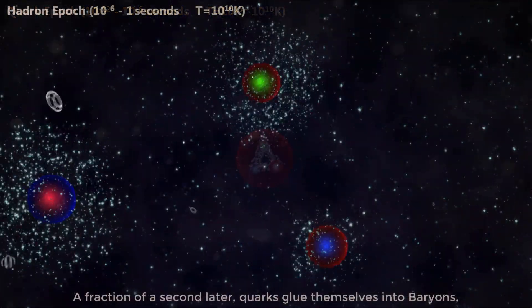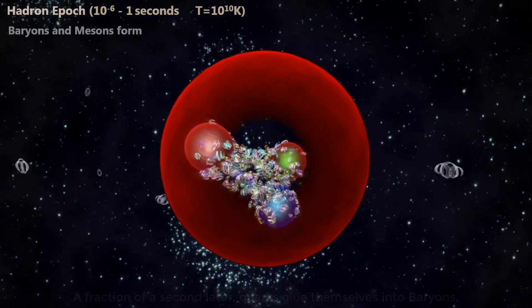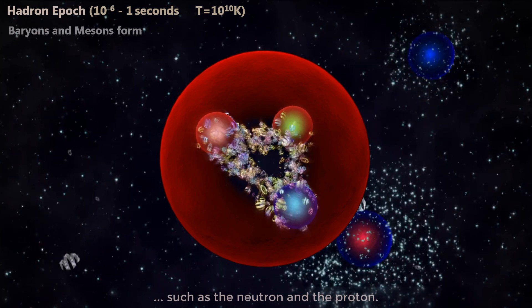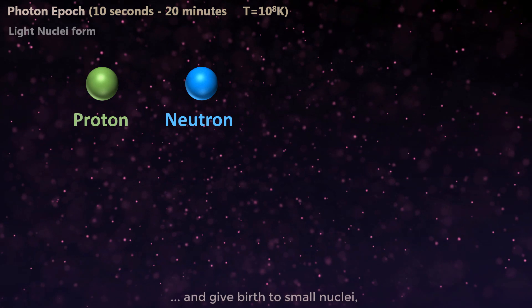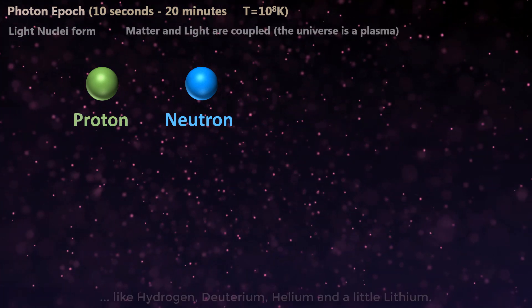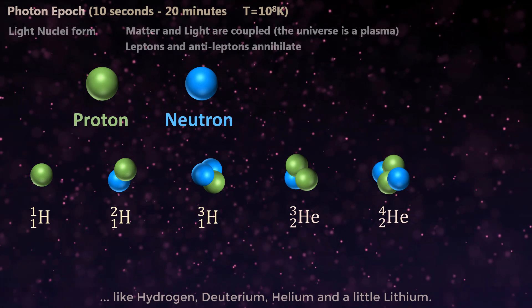A fraction of a second later, the quarks glue themselves into baryons, such as neutrons and protons. Protons and neutrons pair up and give birth to small nuclei, like hydrogen, deuterium, helium, and a little lithium.